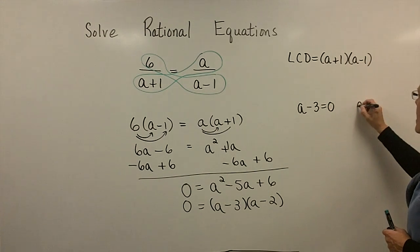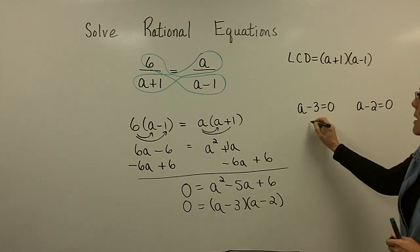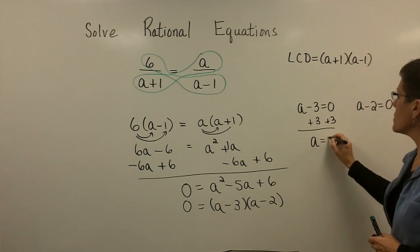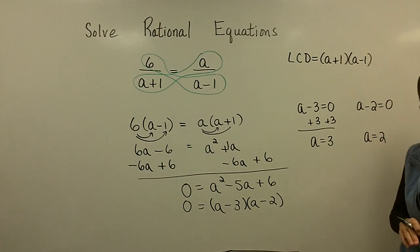And I'd set the a minus 2 equal to 0 to find my other solution. You know, you add 3 to both sides and find out that one of your answers to this problem is the number 3. And when you add 2 to both sides on this one, the other answer is a positive 2.